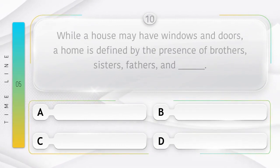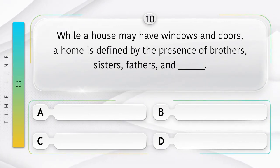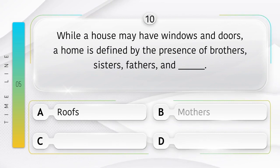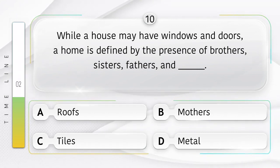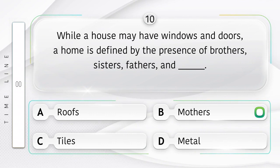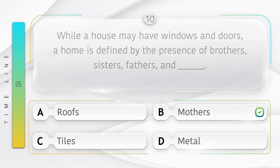While a house may have windows and doors, a home is defined by the presence of brothers, sisters, fathers, and blank. Options are A. Roofs, B. Mothers, C. Tiles, D. Metal. Answer is option B, Mothers.